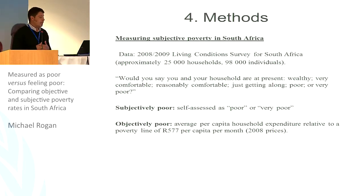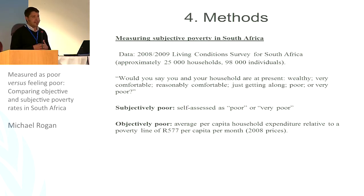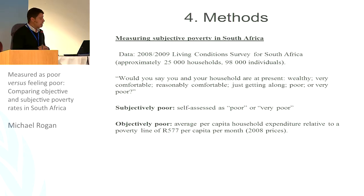Turning to our methods, we have a recently released dataset in South Africa — a large-scale nationally representative survey. For the first time in South Africa, it combines comprehensive income and expenditure information with a number of subjective well-being and subjective poverty questions. The question we use is the direct subjective poverty question, where one member of the household is asked to assess the poverty status of their household, with options ranging from wealthy, very comfortable, reasonably comfortable, just getting along, poor, or very poor. We then classify as poor those who identify themselves as poor or very poor.